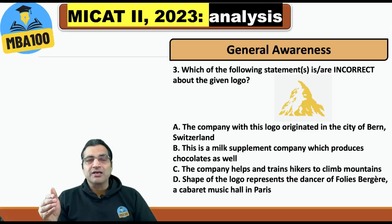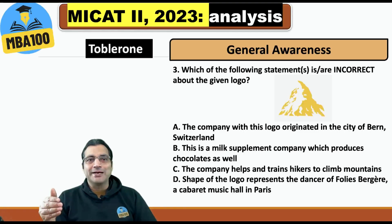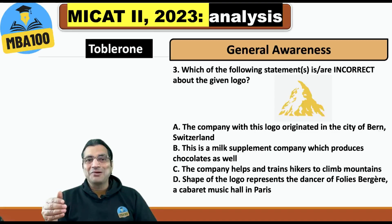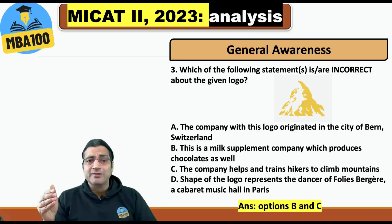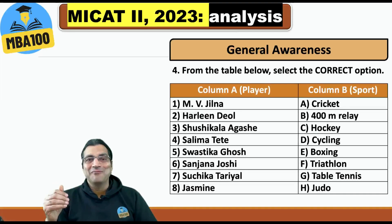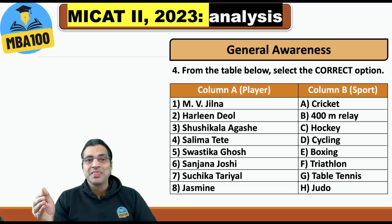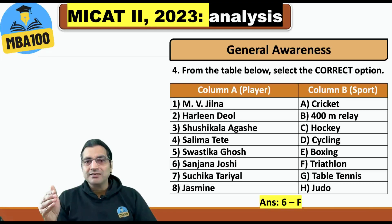Which of the following statements are incorrect about the given logo? This was about Toblerone. The company with this logo originated in the city of Bern, Switzerland — absolutely correct. The shape of the logo represents a dancer — these two statements being correct means they are not the incorrect ones. The incorrect statements are B and C. There were also questions about female athletes — and the answer was 6F, the only correct match. Sanjana Joshi is a triathlon player.